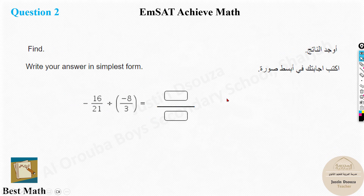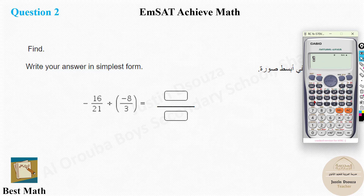For Question 2, you need to find the simplest form. Use the calculator and find the answer directly, or you can solve it manually. Since it's division, make sure you reciprocate and change the sign to multiplication and solve. Using the calculator: it's negative 16 divided by 21, divided by minus 8 divided by 3, and the answer is 2 over 7. Whenever you find an easy question, do it quickly to balance out time.